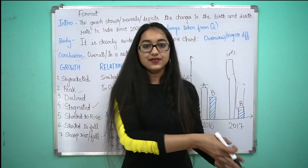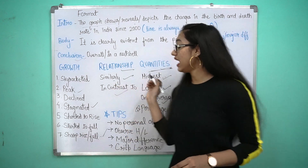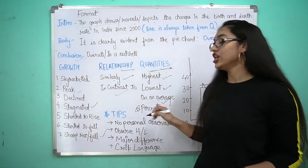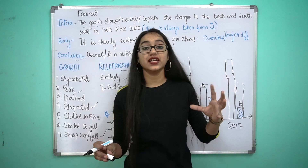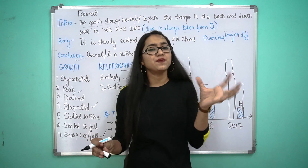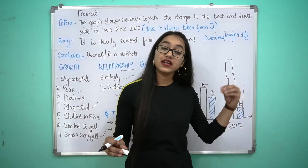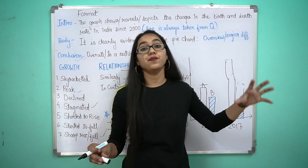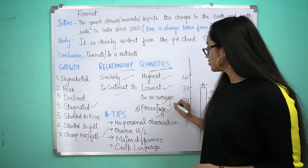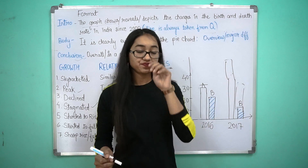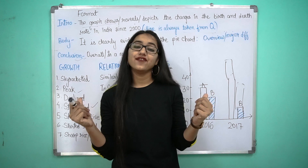Next है quantities — इसमें आता है highest, lowest, on an average, percentage। इससे क्या होता है कि मैं सिर्फ units में increase या decrease नहीं बता रही, बल्कि percentage भी बता देती हूँ। यह न सिर्फ इतनी units से बढ़ा बल्कि it was a major change — और इतना percent ज़्यादा sales हुई। तो percentage निकाल दो और paragraph को और attractive बना दो।